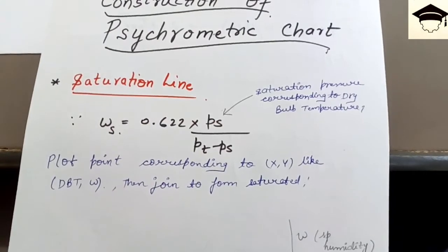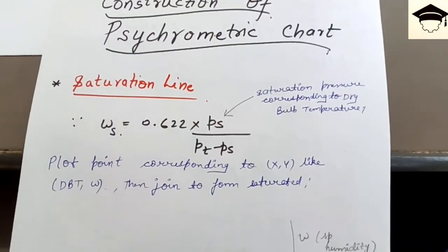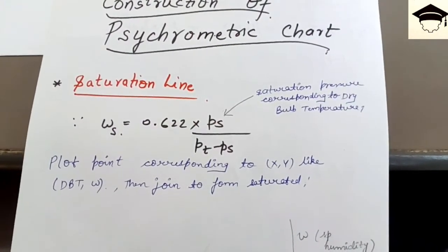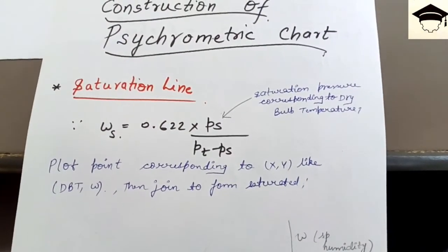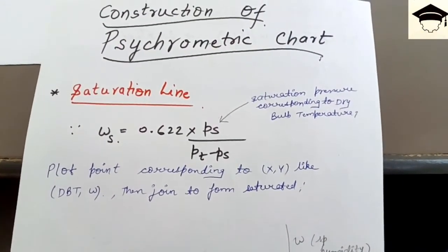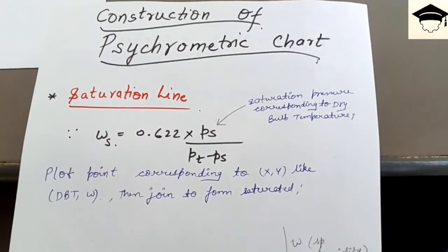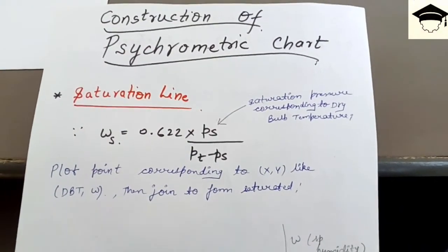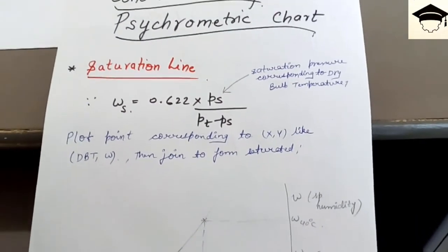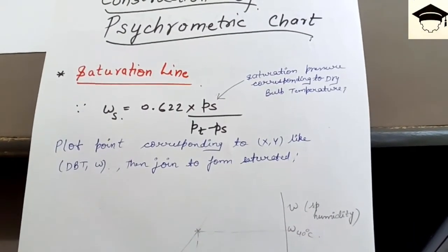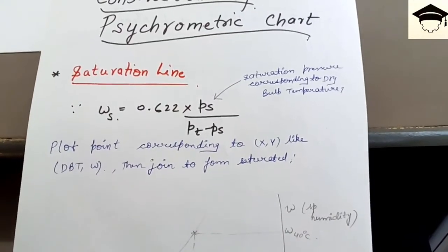To draw the saturation line you need two or more points. On the psychrometric chart the x-axis represents dry bulb temperature and the y-axis represents specific humidity (Ω).